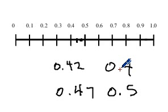So 0.42 rounds to 0.4. 0.47 rounds to 0.5, so it goes up to the next one.